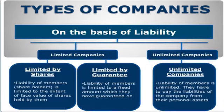On the basis of liability: limited companies and unlimited companies. Limited companies are classified into two categories: limited by shares and limited by guarantee. Limited by shares — liability of the members is limited to the extent of face value of the shares held by them. Limited by guarantee — liability of the member is limited to a fixed amount which they have guaranteed. Unlimited companies — liability of the member is unlimited; they have to pay the liabilities of the company from their personal assets.